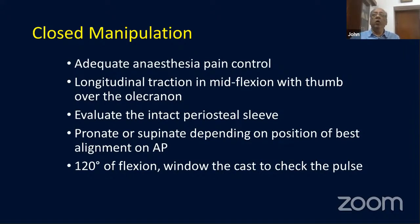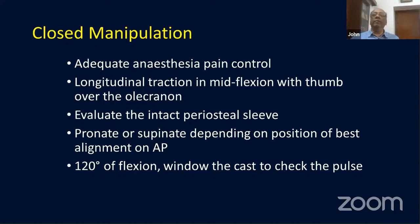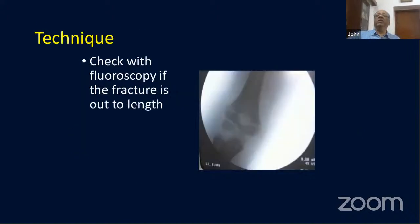For closed reduction, the child must be adequately under anesthesia with pain control so manipulation can be done without the child jumping around. In modern practice it is not fair to do this without anesthesia. Give longitudinal traction first, reduce the lateral displacement, and then flex the elbow to get proper reduction.